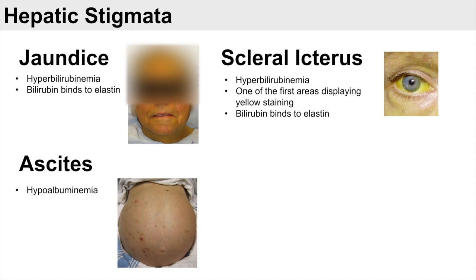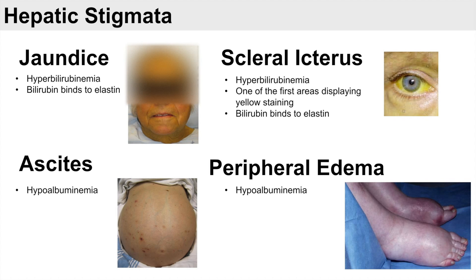If the liver is not functioning properly, albumin is not produced in sufficient quantity, leading to hypoalbuminemia. This reduces the blood's ability to pull interstitial fluid back in, and we see large accumulations of fluid in places like the abdomen and the periphery — which is why we also see peripheral edema.